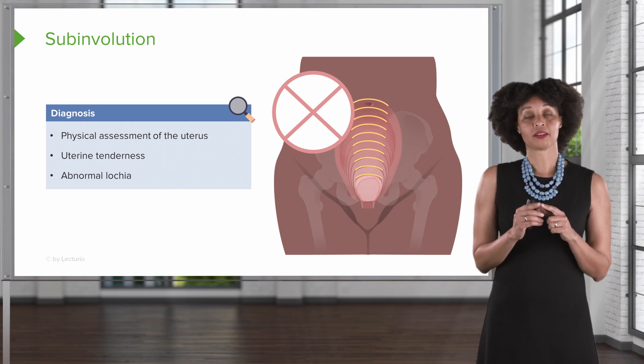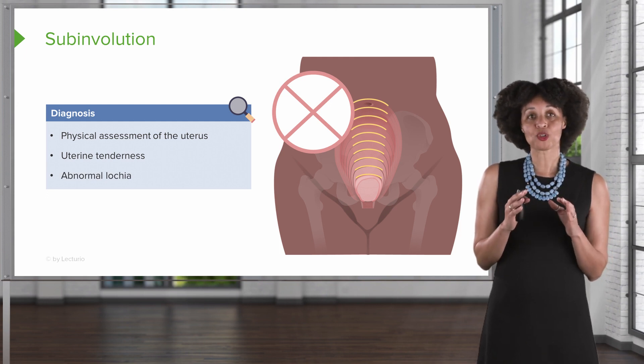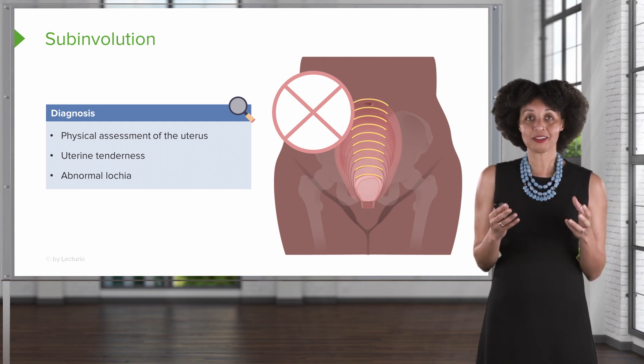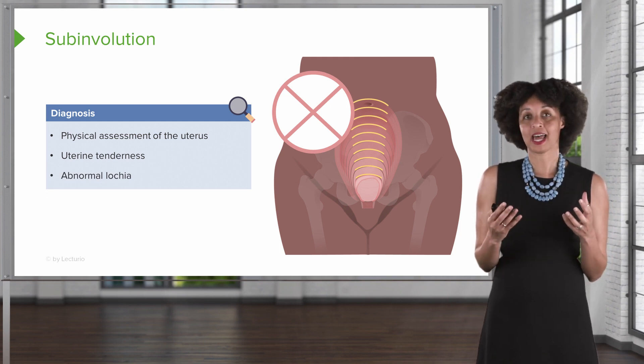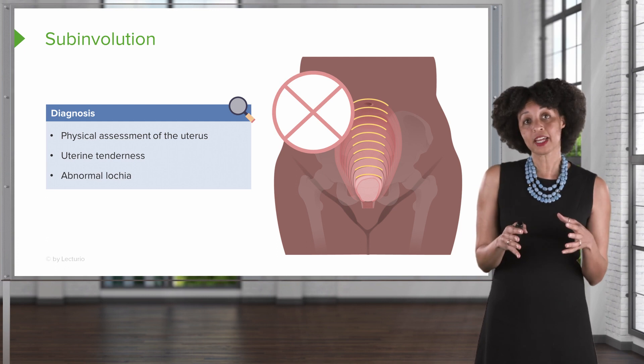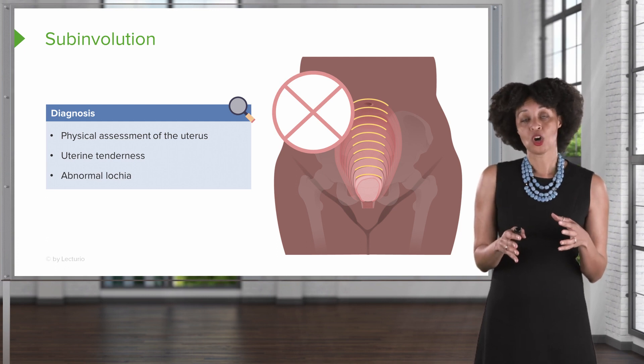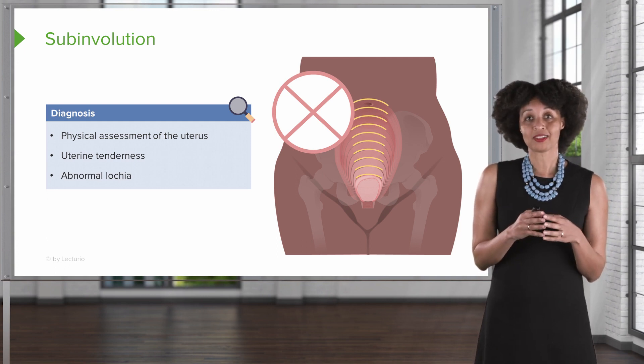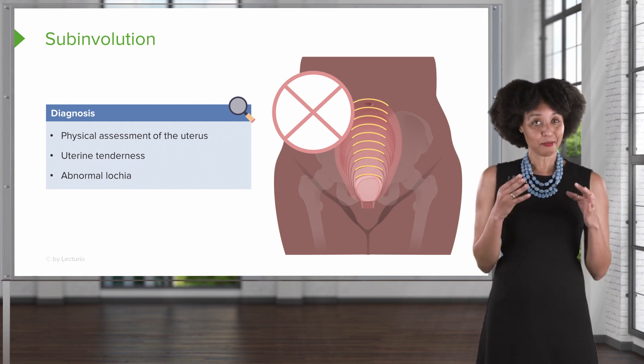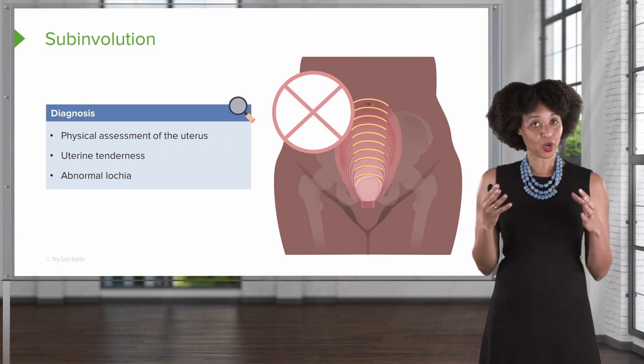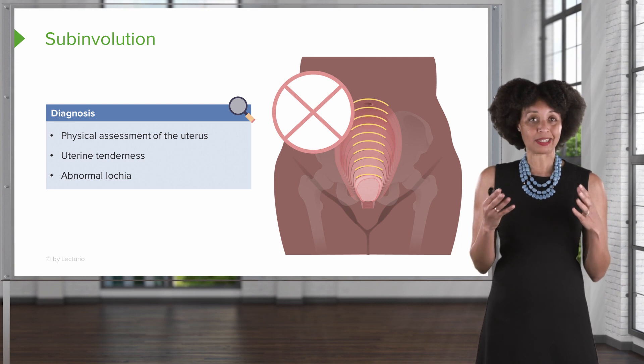Abnormal lochia is another diagnostic sign. When we say abnormal, we specifically mean there is more of it than there should be, or if the lochia is infected, it might have an unusual odor or consistency.